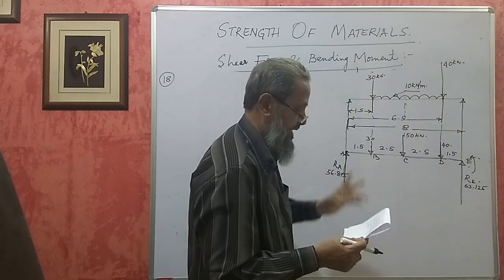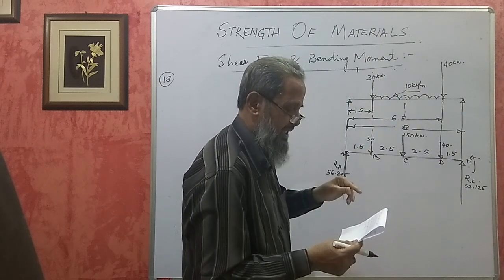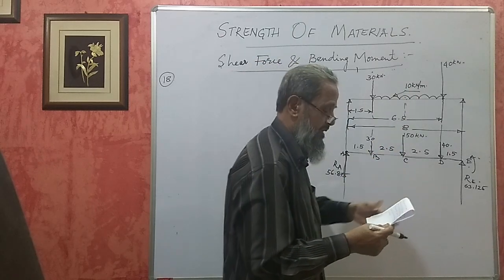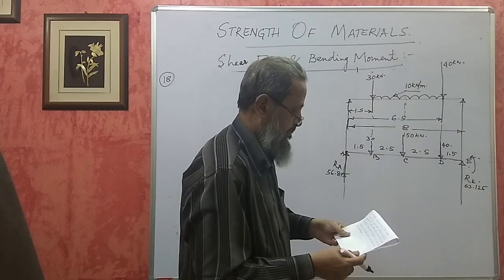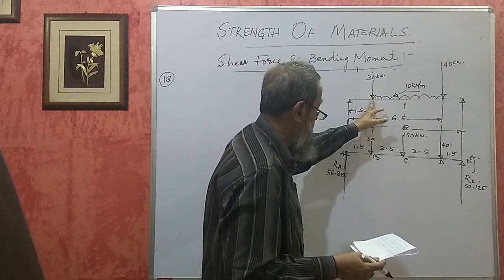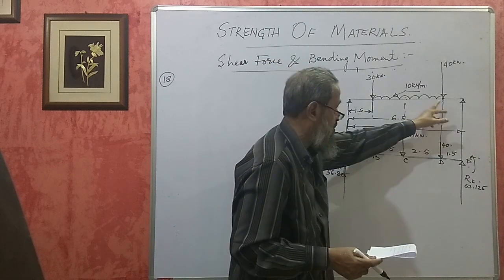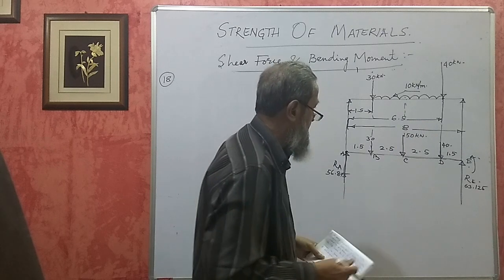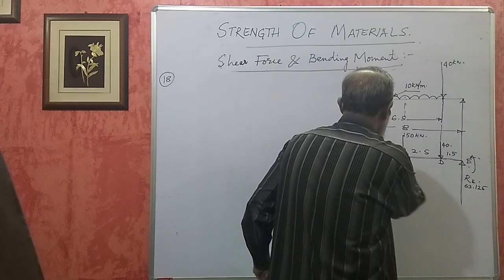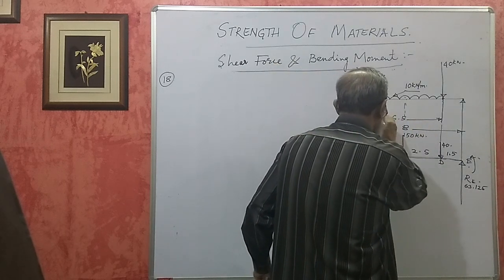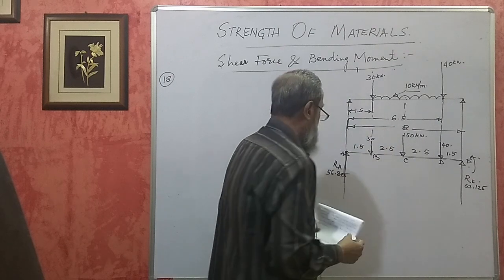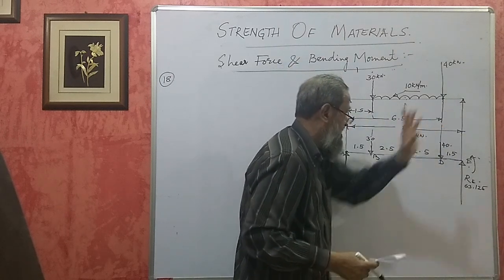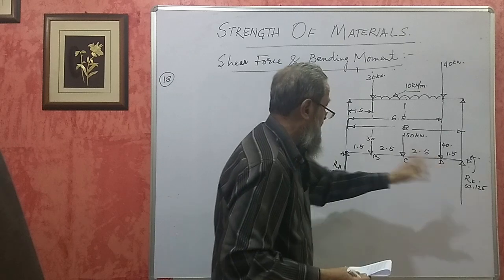It also carries a UDL of 10 kilonewton per meter between the point loads. That means from 1.5m to 6.5m, this distance becomes 5 meters. So UDL spans 5 meters, and the remaining segment on the right is 1.5 meters.